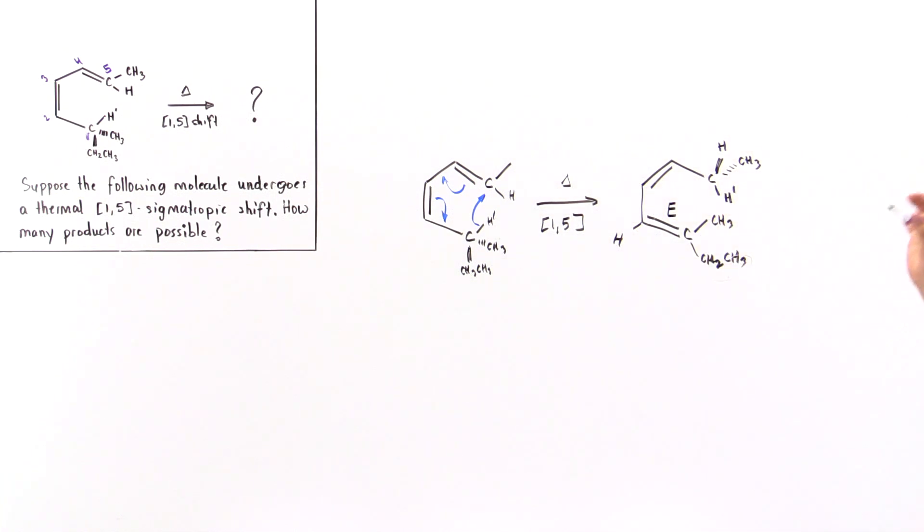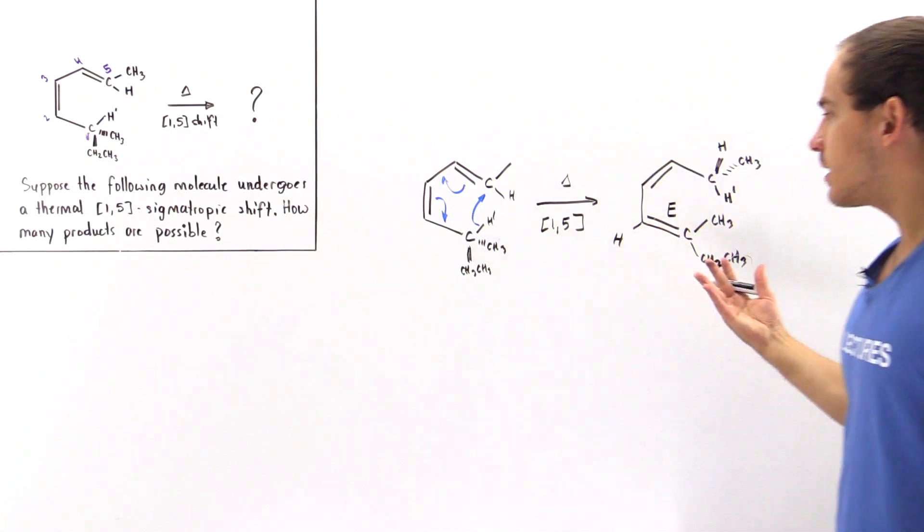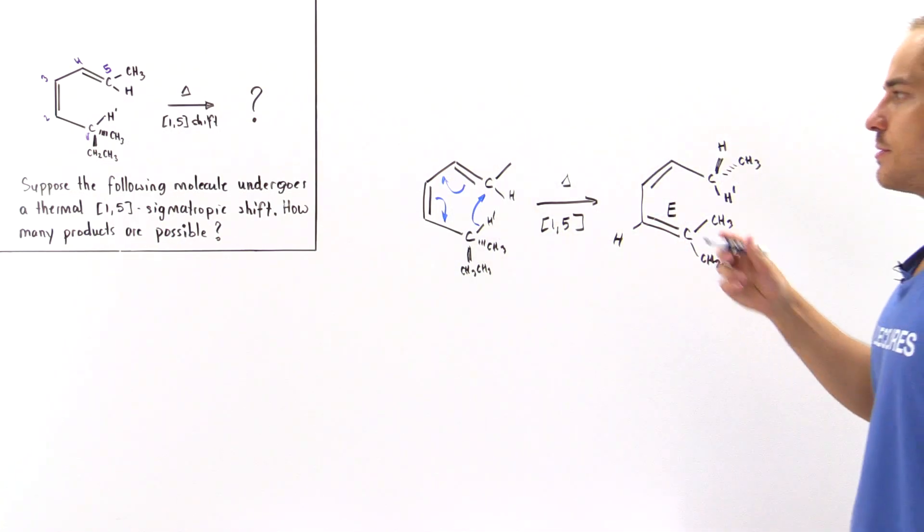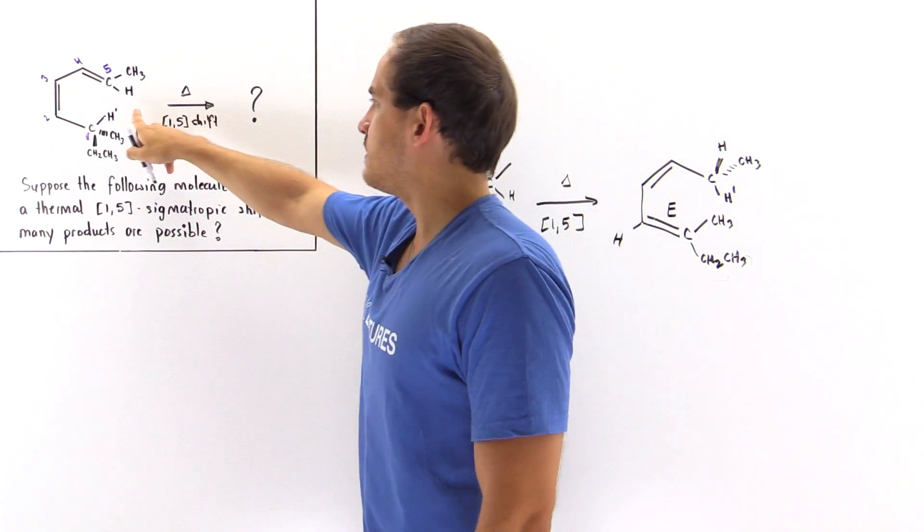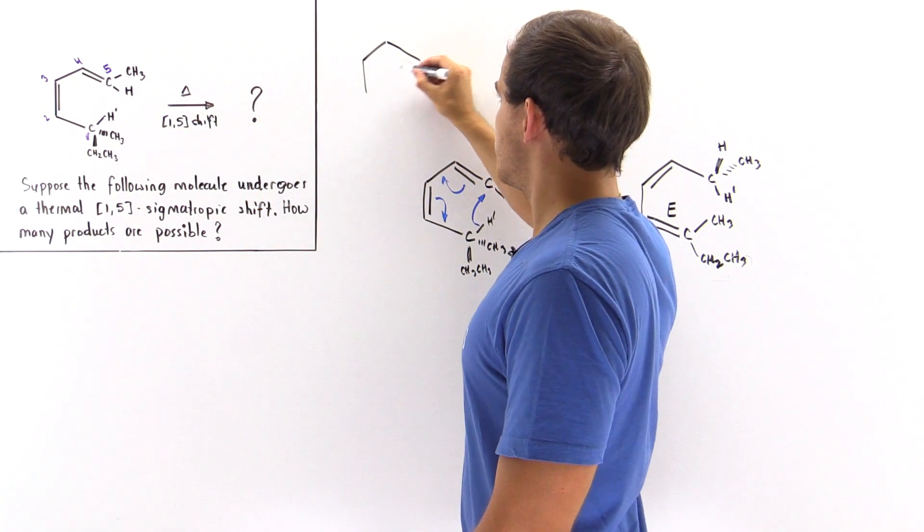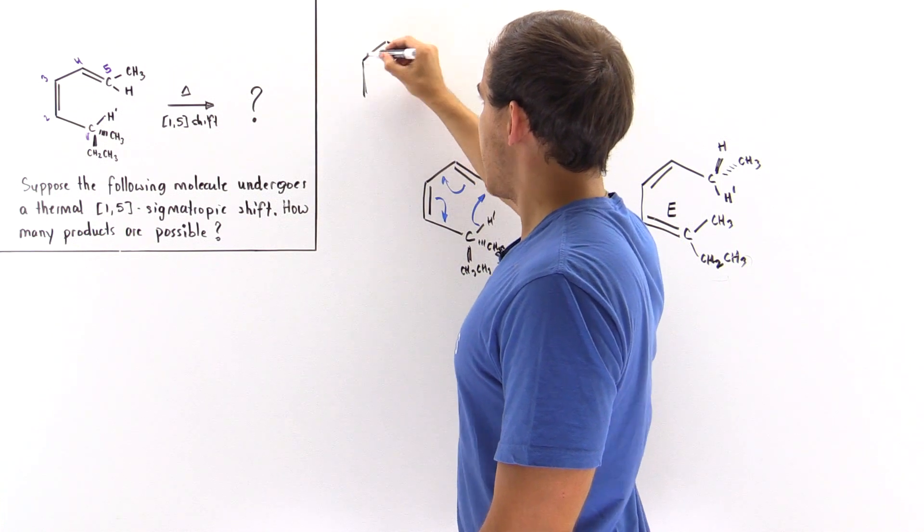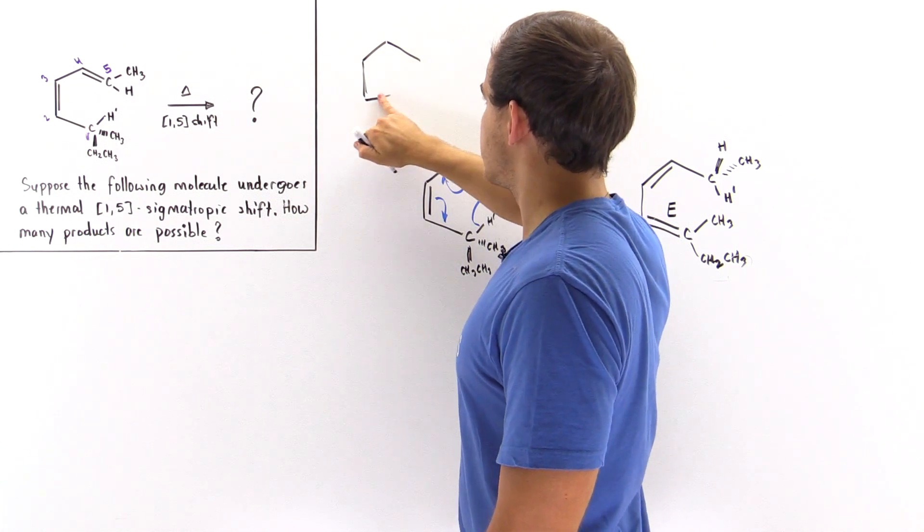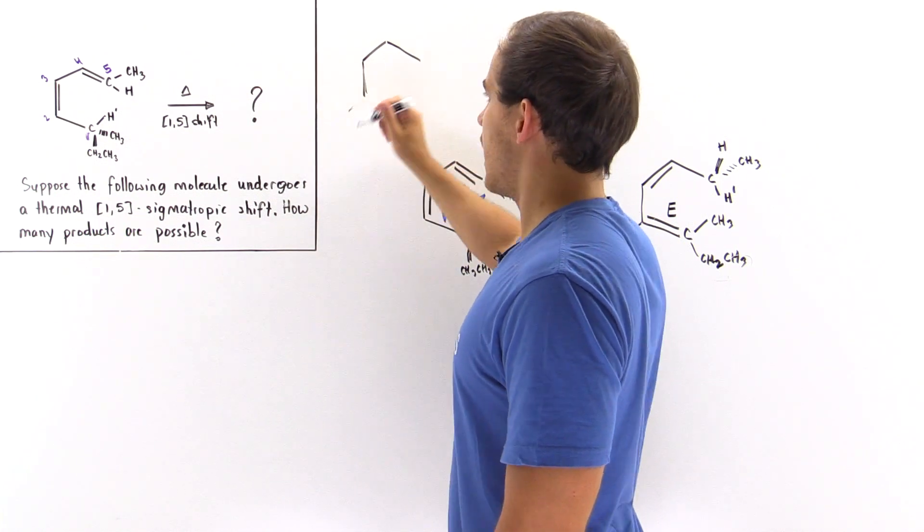Now we can also form a Z isomer. How exactly can we form that product with the Z isomer symmetry? So let's look at this molecule one more time. Let's redraw this molecule and see how it can rotate to lead to the Z isomer product.